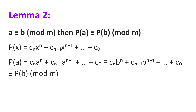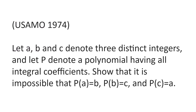Now, we will move on to some problems. Let a, b, and c denote three distinct integers, and let p denote a polynomial with all integral coefficients. Show that it is impossible that p(a) = b, p(b) = c, and p(c) = a. Please pause the video here and have a think about the problem on your own before proceeding to the solution.